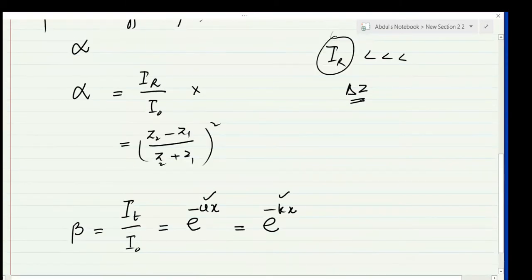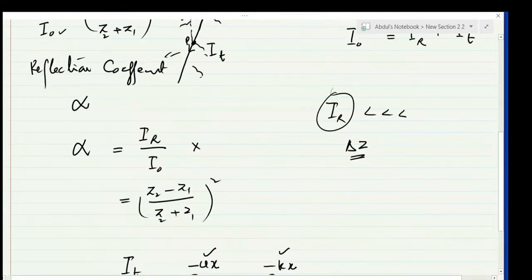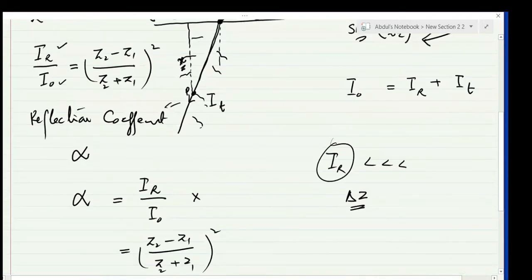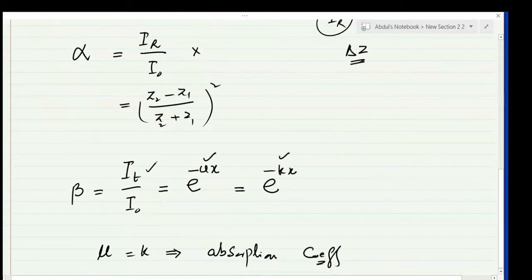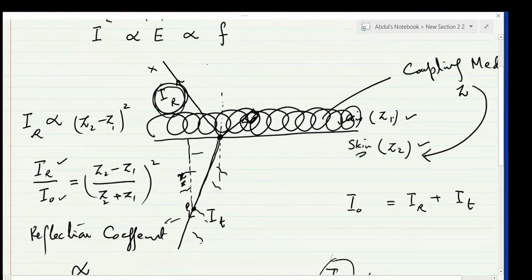Here x is the depth at which we are measuring this ratio — suppose we are measuring at point P, then x is the depth. The absorption of ultrasound during downward transmission is not linear; it is exponential. That is why the ratio is e^(−μx), where μ is the linear absorption coefficient.